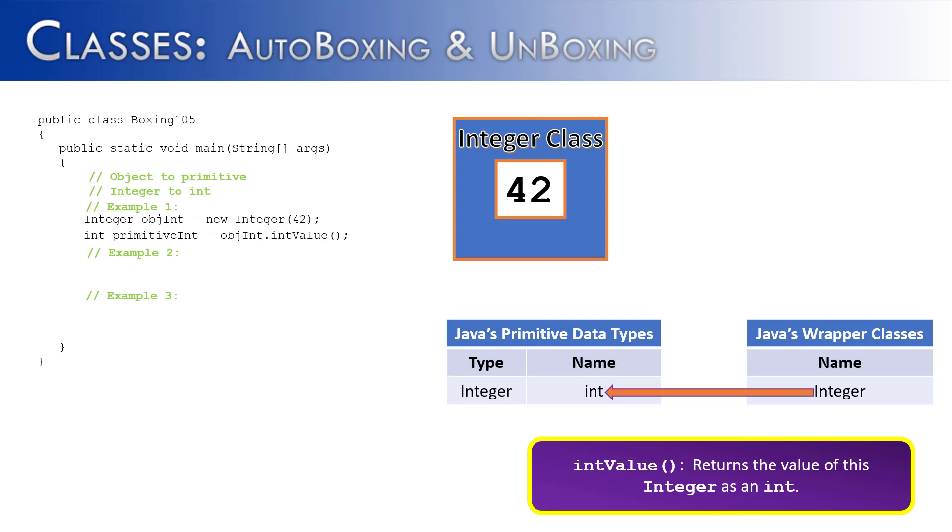In the first example here is the same example that we used in the first slide of creating an integer object called objint and inside of it is 42 wrapped inside of the integer class. On the next line we create an int primitive called primitiveint and we take objint and call the method intValue on it which is going to take that object and unwrap it leaving the primitive 42 to be stored inside of primitiveint, moving from integer to int, object to primitive.